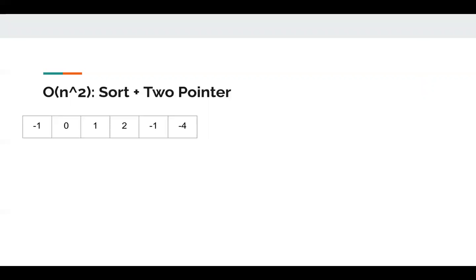Let's come up with an O(n^2) solution. It's using sorting and two pointers. This is our example: negative one, zero, one, two, negative one, negative four. First, we sort it. We can use in-place sort.